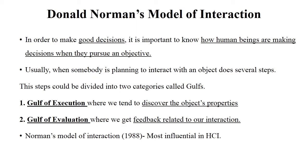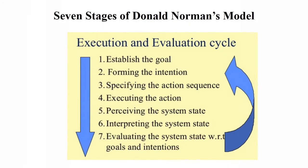These are the seven stages of Donald Norman's model — an important topic for your exam. First: establish the goal. Second: forming the intention. Third: specifying the action sequence. Fourth: executing the action. Fifth: perceiving the system state. Sixth: interpreting the system state. Seventh: evaluating the system state with respect to goals and intentions.